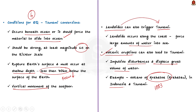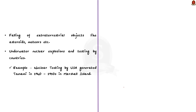There are also other causes, like the falling of extraterrestrial objects such as asteroids and meteors, which can also create tsunamis. Sometimes, underwater nuclear explosions can create tsunami waves. For example, nuclear testing by the USA in the 1940s to 1950s in the Marshall Islands created tsunami waves. These are the important causes of tsunami.